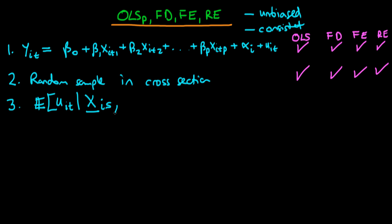And s here can be any time period including the circumstance where s equals t and we are also going to condition this expectation on the unobserved effect alpha_i and we require that this is equal to zero and again we require that this is the case in each of the four estimators which we have up here.